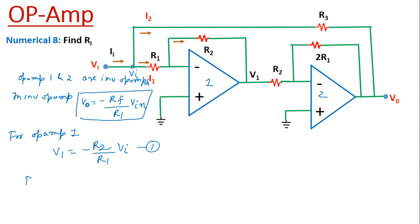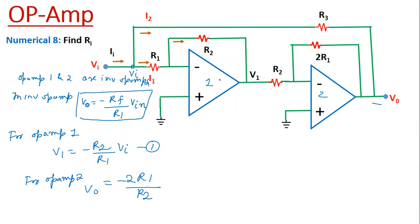For op-amp 2, the output voltage is V0. V0 is equal to minus of the feedback resistance 2R1 divided by the input-side resistance R2, multiplied by the input voltage to op-amp 2, which is the output of op-amp 1, that is V1. This is equation number 2.